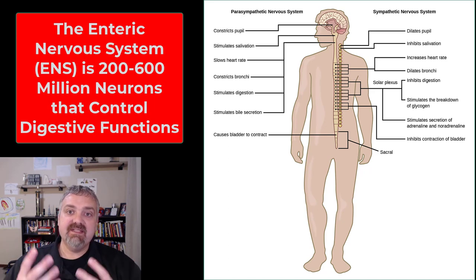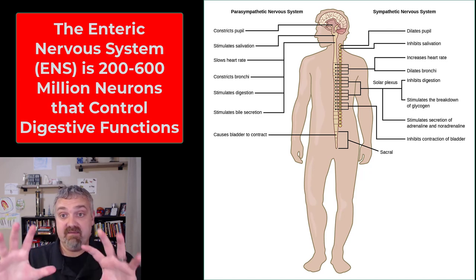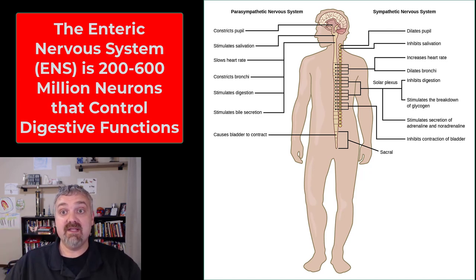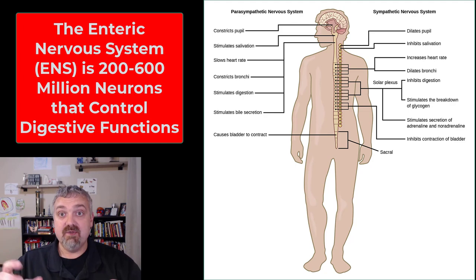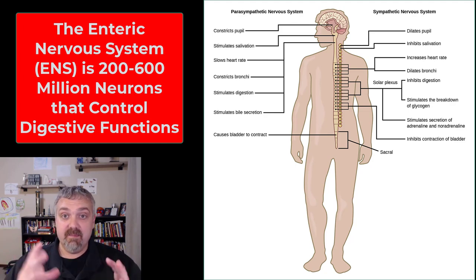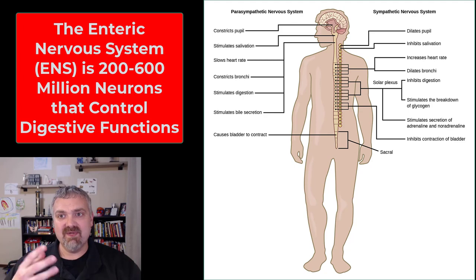There is also a third division of the autonomic nervous system called the enteric nervous system. It's a huge, extensive network of neurons — somewhere between 200 and 600 million neurons in the walls of the digestive tract. A lot of the subconscious control of digestion is under the purview of the enteric nervous system. It has more neurons than your spinal cord, so it's a big part of your nervous system, but we're still teasing out everything that it does.